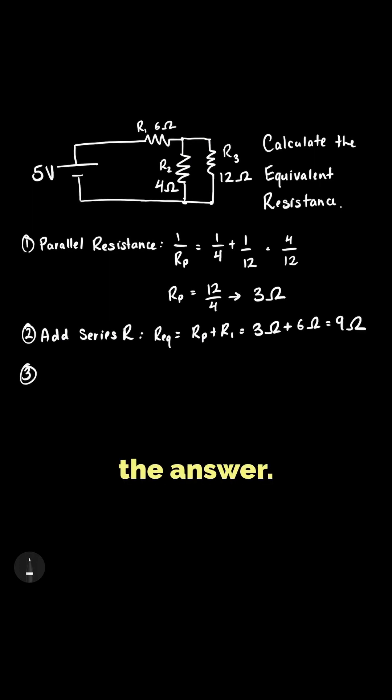Finally, verify the answer. The total resistance must be smaller than the largest resistor in the circuit, which was 12 ohms. Since our total is 9 ohms, our answer checks out.